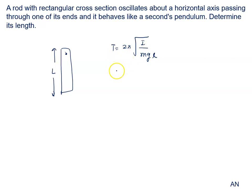Time period for second pendulum is given by 2 seconds. It is 2π root I. Moment of inertia with respect to one end of the rod is known as 1/3 mL² divided by mgL. L is the distance from the point of oscillation to center of mass, that is for uniform distribution it will be taken as L/2.